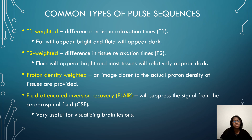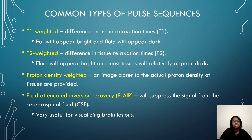We have different types of pulse sequences. For your T1 weighted, this is going to show differences in tissue relaxation times — fat will appear bright and fluid will appear dark. For your T2 weighted images, fluid will appear bright and most tissues will be relatively dark. You also have your proton density weighted, which is closer to the actual proton density of the tissues.